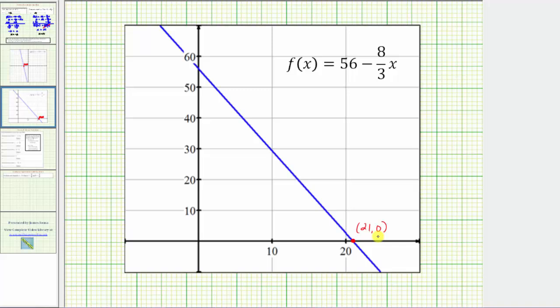The x-intercept or horizontal intercept is the point (21, 0), which again tells us when the input or x value is 21, the output or function value is zero. So this graph also verifies our work is correct.